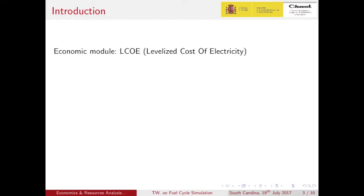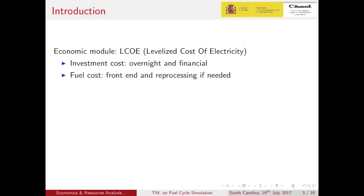The latest update of Trebol includes an economic module for cost estimation. It uses the levelized cost of electricity metric, breaking out the cost in four different categories. Investment includes the overnight and the financial cost. Fuel covers the front-end costs, and for cases where reprocessing is needed for fabrication, the reprocessing cost is also included.